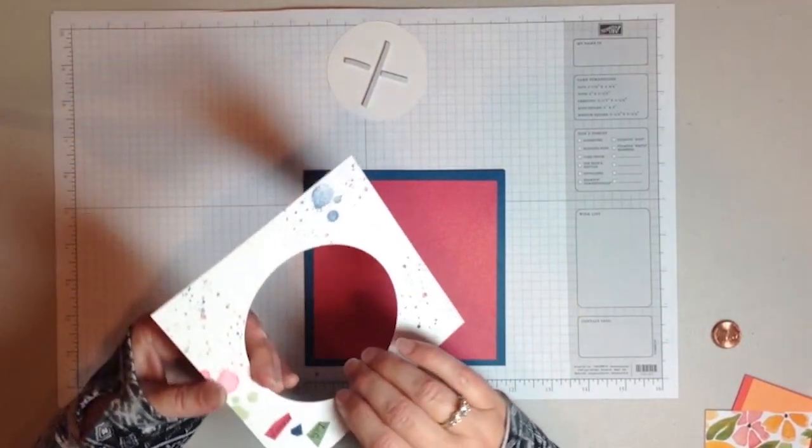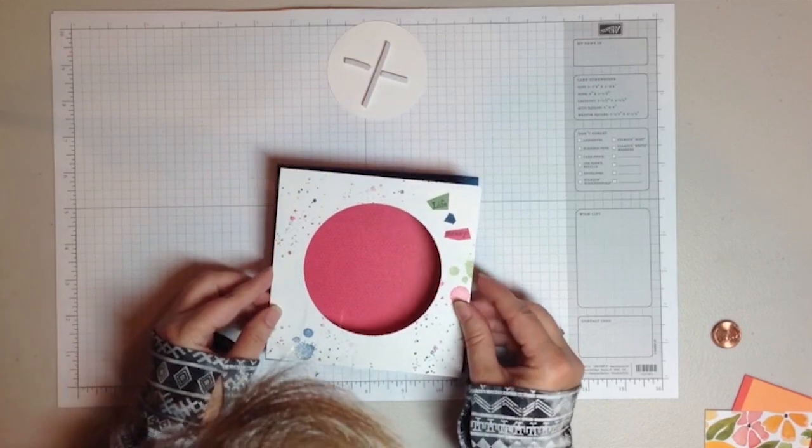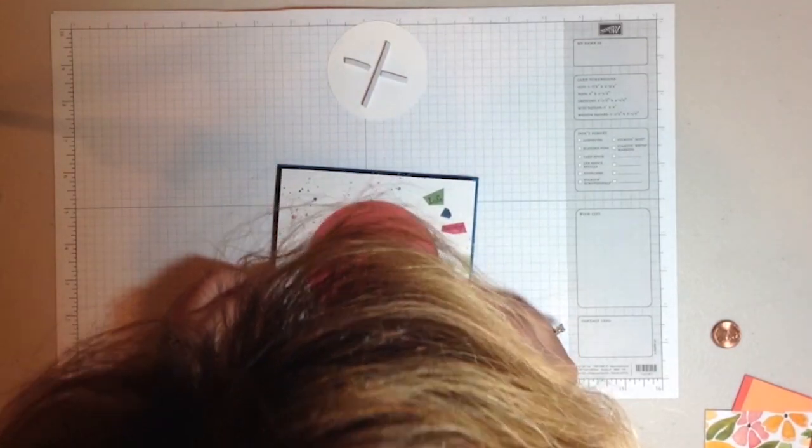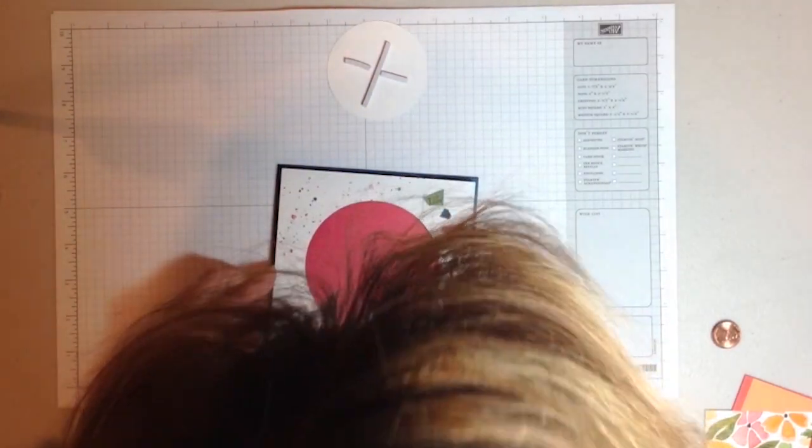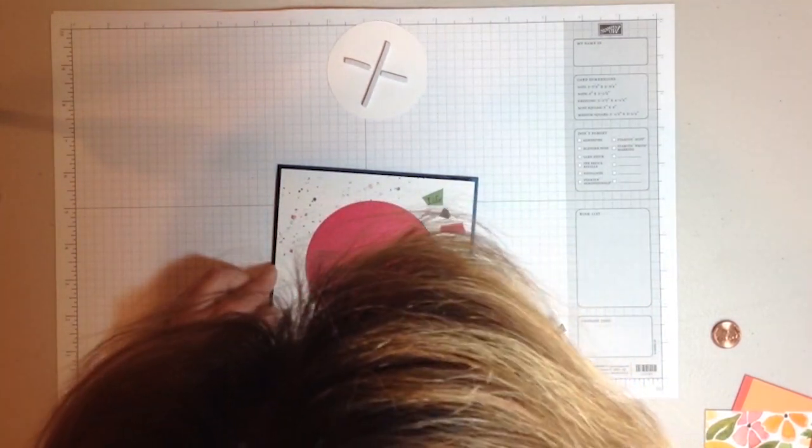Then take the stamped outer piece and take a moment to make sure that you have that centered because once that's stuck, it's pretty difficult to move with all of that adhesive.